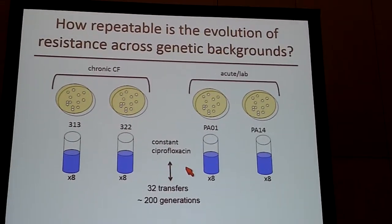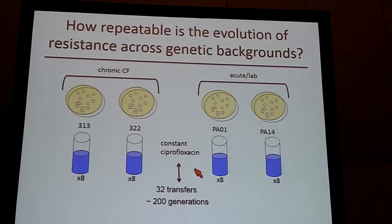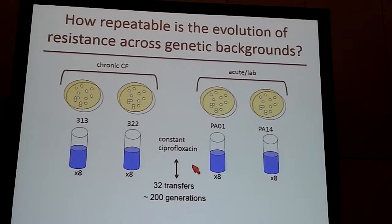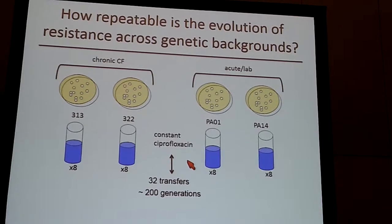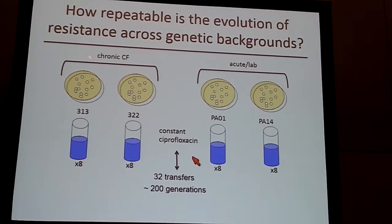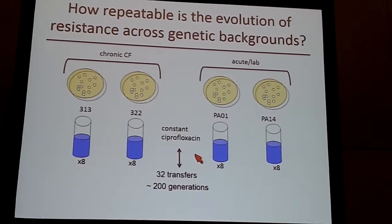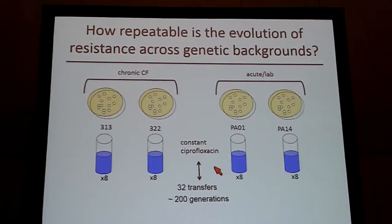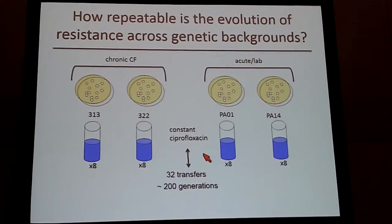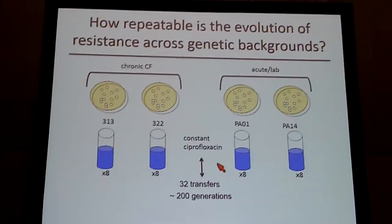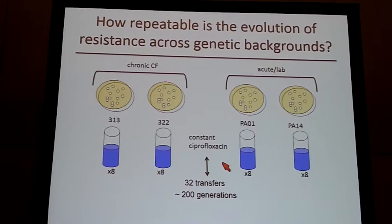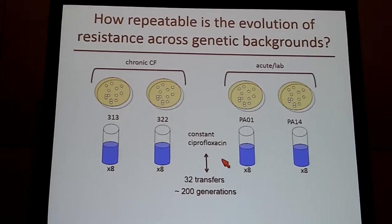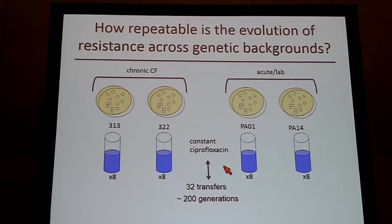Here is my experimental setup. I have four initial starting strains. On the left are two from chronic cystic fibrosis infections — bacteria that have been residing within the lungs of patients probably for years, experiencing many generations of selection. They're called strains 313 and 322, isolated from cystic fibrosis patients in Ontario, Canada. On the right are acute strains isolated from wound infections, with little interaction with the immune system, frequently used in lab studies — about 90% of lab studies use these strains, called PA01 and PA14. I had eight replicate evolving populations from each of these four genetic backgrounds, grown in constant ciprofloxacin concentration for about 200 generations.